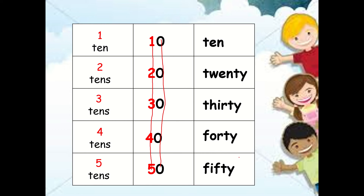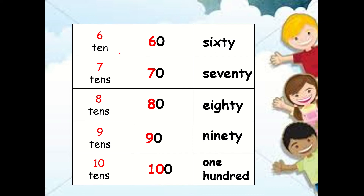Please familiarize yourself with the number names as well. Six tens is sixty — six, zero. Seven tens, seventy — seven, zero. Eight tens, eighty — eight, zero. Nine tens, ninety — nine, zero. How about ten tens? Meaning there are ten groups of ten. Simply write ten and add zero. If you see one, zero, zero, that means one hundred. So this number is one hundred.